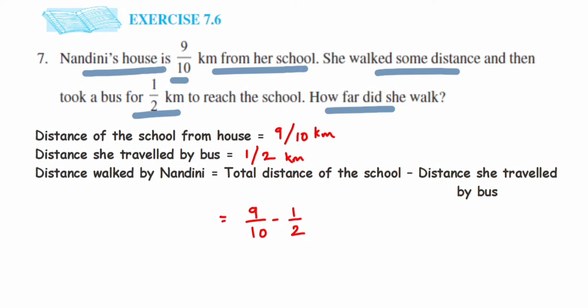Now we cannot directly subtract them because they are unlike fractions. So we have to take LCM of 10 and 2 to make them like fractions. So LCM of 10 and 2 is 10. Now for the first number we don't have to change because 10 is there in the denominator.